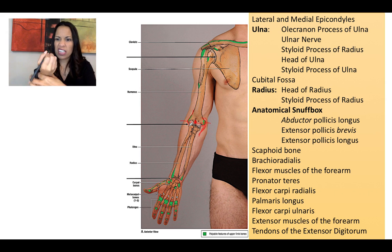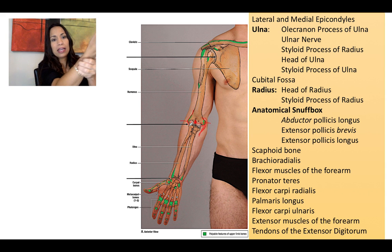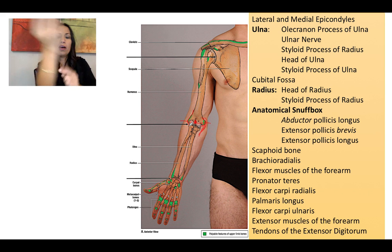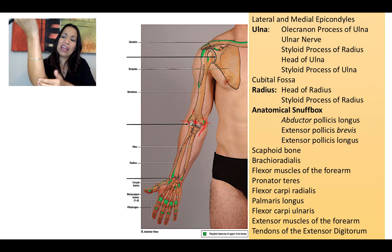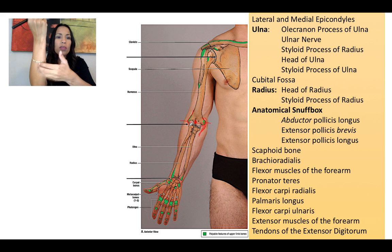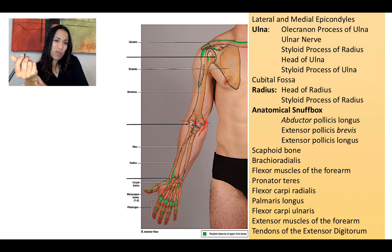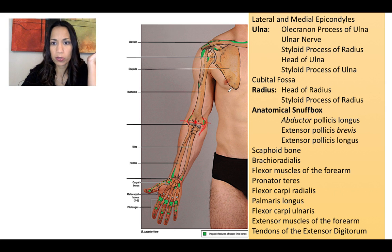The styloid process of the distal radius can be touched at the lateral portion of your forearm. Almost the entire ulna can be touched in the posterior aspect of the forearm — the rest of the forearm cannot be felt because the bones are covered with muscles.